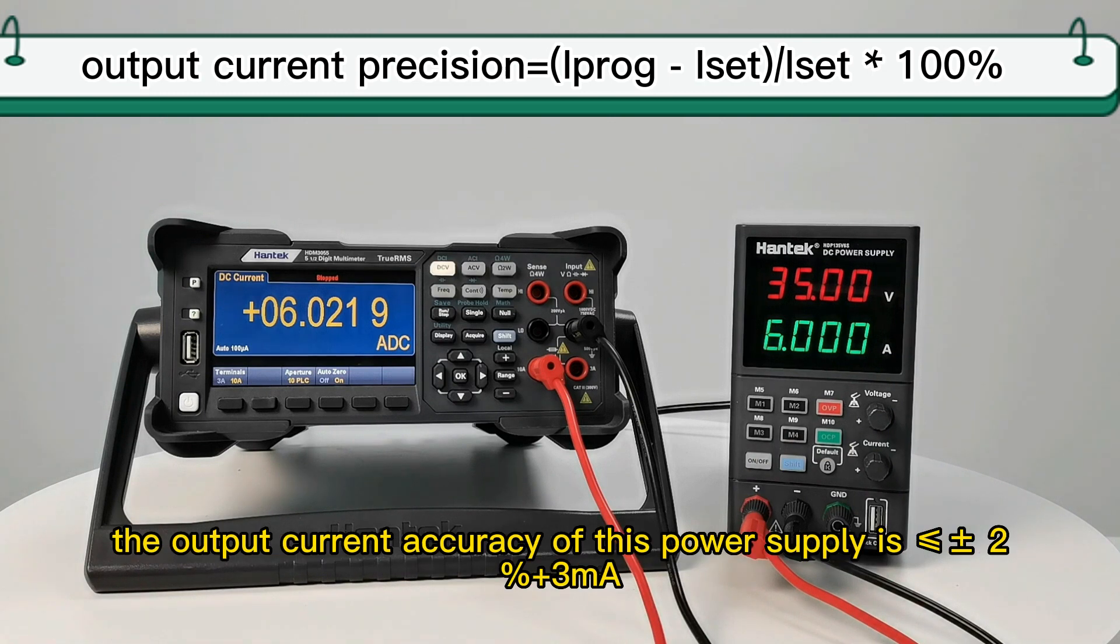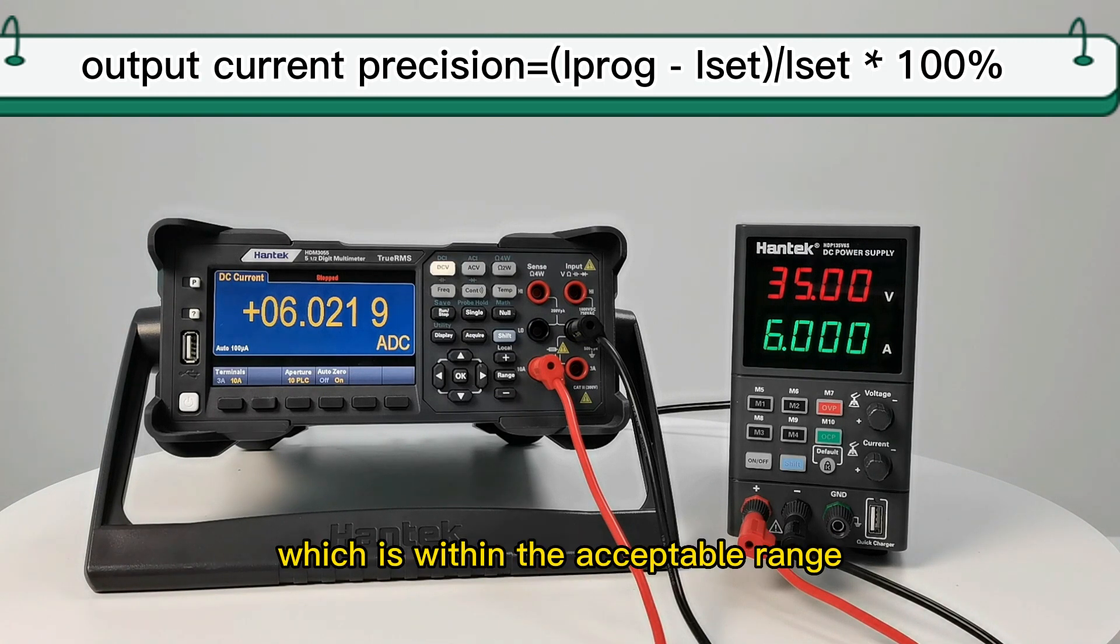From the results of several measurements, the output current accuracy of this power supply is ≤ ±2% + 3mA, which is within the acceptable range.